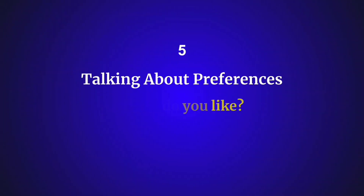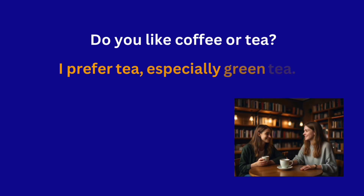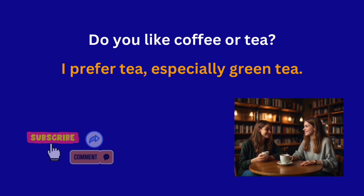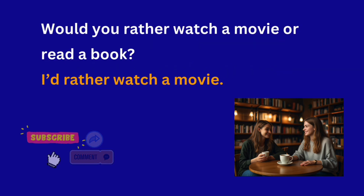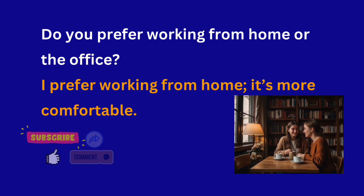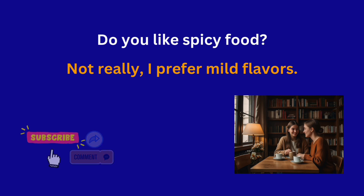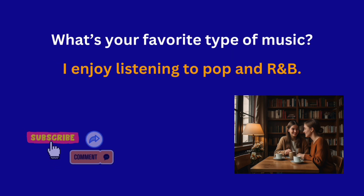Talking about preferences. What do you like? Here's how to talk about preferences. Do you like coffee or tea? I prefer tea, especially green tea. Would you rather watch a movie or read a book? I'd rather watch a movie. Do you prefer working from home or the office? I prefer working from home, it's more comfortable. Do you like spicy food? Not really, I prefer mild flavors. What's your favorite type of music? I enjoy listening to pop and R&B.